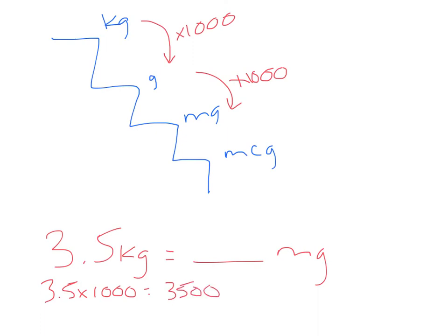But that would be if I was stopping at grams, so I've converted to grams so far. But because I'm trying to get to milligrams, that's another step, so I have to multiply it again by 1000 and that's going to give me 3,500,000. That would be the answer I'm looking for in this case.